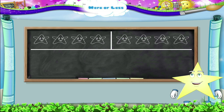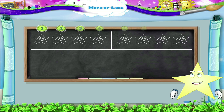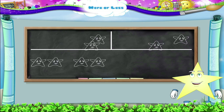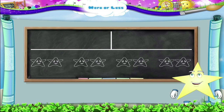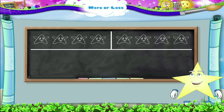Now here are some starfish. We have one, two, three, four starfish on one side. And one, two, three, four starfish on the other side. Let's make one-to-one pairs, Starry. Look, there are no extra starfish. The starfish on both sides are the same. So we say, both sides have equal starfish.